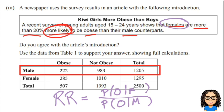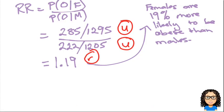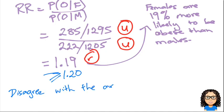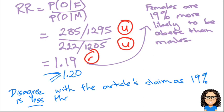For Excellence, I need to go back and answer the question: do I agree with the introduction? The statement claims females are more than 20% more likely to be obese, implying the relative risk must be more than 1.20. Our result of 1.19 means 19% is less than 20%, so I disagree with the claim.